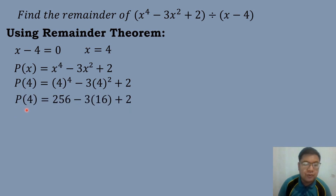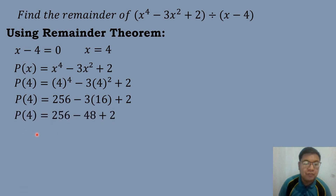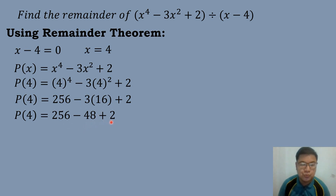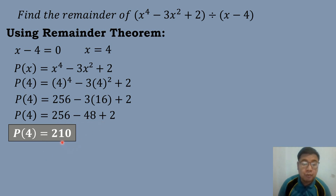So 4 to the fourth power means 4 times 4 times 4 times 4, which equals 256. Then negative 3 times 16 equals negative 48. So we have P of 4 equals 256 minus 48 plus 2, which equals 210. So the remainder is equal to 210.